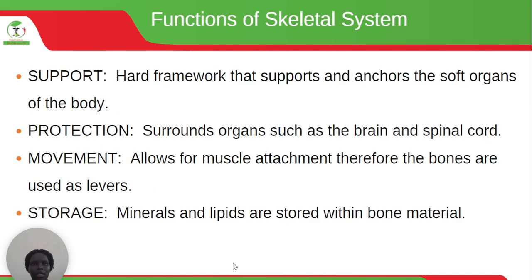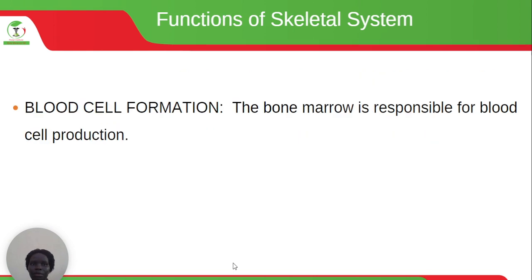These are the functions of the skeletal system. The skeletal system helps in support — it has a hard framework that supports the soft organs of the body. It also protects vital organs like the brain and the spinal cord. It aids in movement because it gives attachment to the muscles and acts as a lever. Minerals and liquids are also stored in the bones. The bone marrow is responsible for blood cell formation.